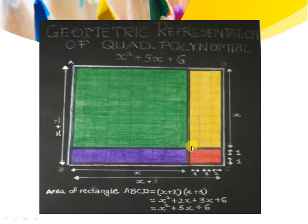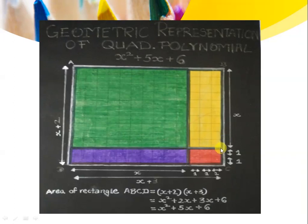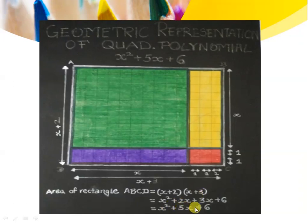Now let us see the figure — that will be easier to understand. Here, this green square represents x squared. Then I have pasted 3 tiles of dimension x cross 1 on one side of the square, and 2 tiles of dimension x cross 1 on the other side. In the end, I have added 6 tiles of dimension 1 cross 1 so that I get a complete rectangle. For this rectangle, the length is x plus 3 and the breadth is x plus 2, so the area is (x + 2)(x + 3), which equals x squared plus 5x plus 6.